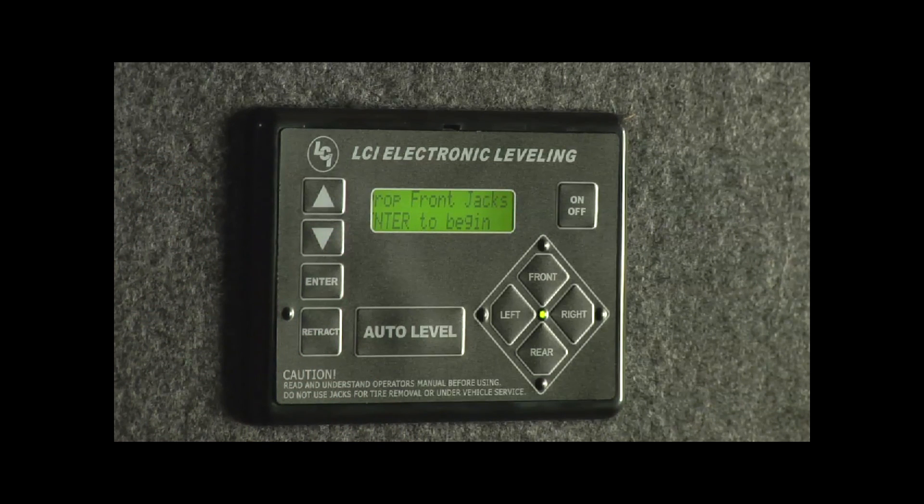Drop the front jacks. That's a function that's in here. So when we back up to the campsite we can scroll in and hit enter. That'll drop those front jacks down so we don't have to hold that button to get those jacks to the lower level.